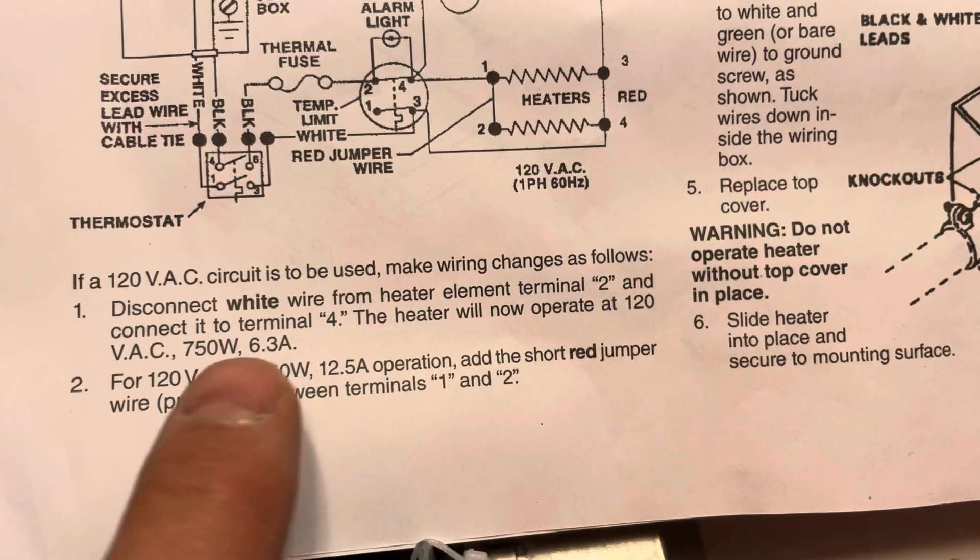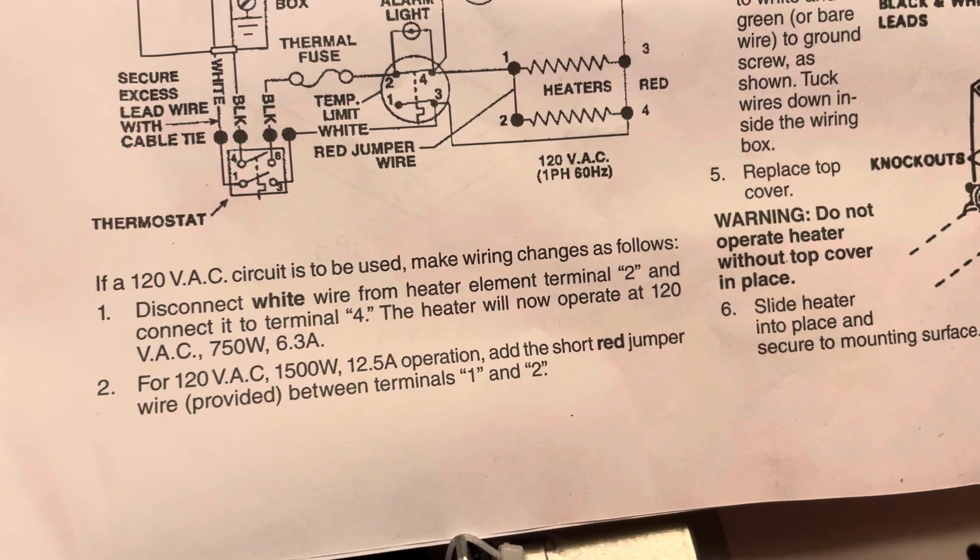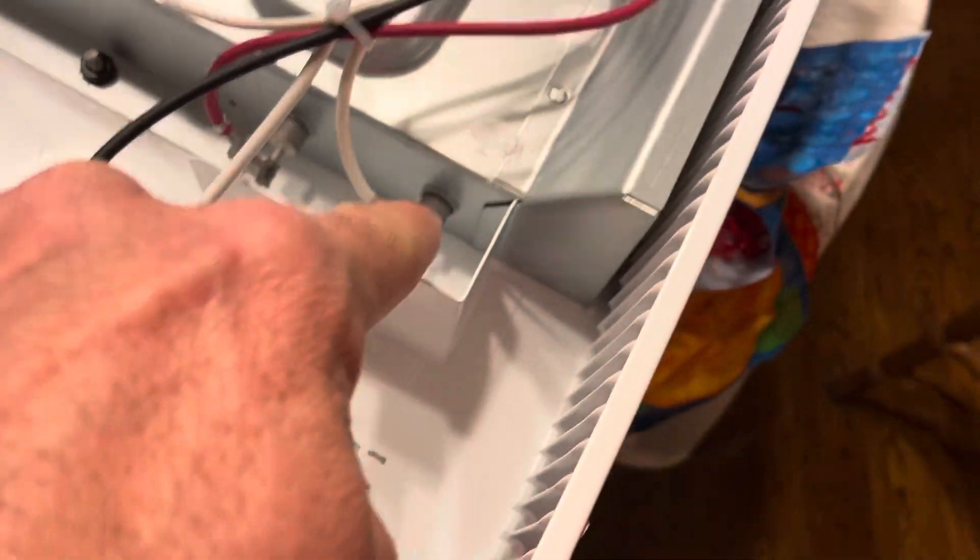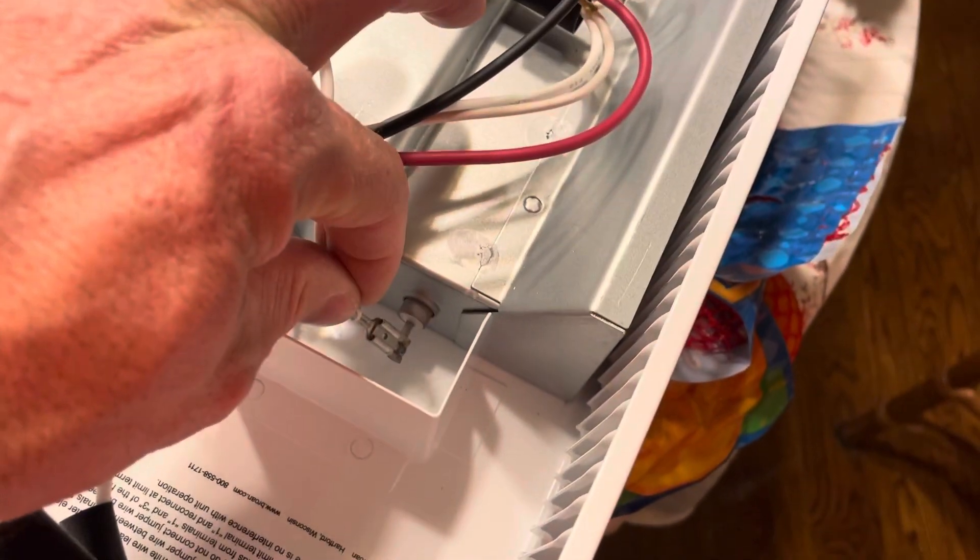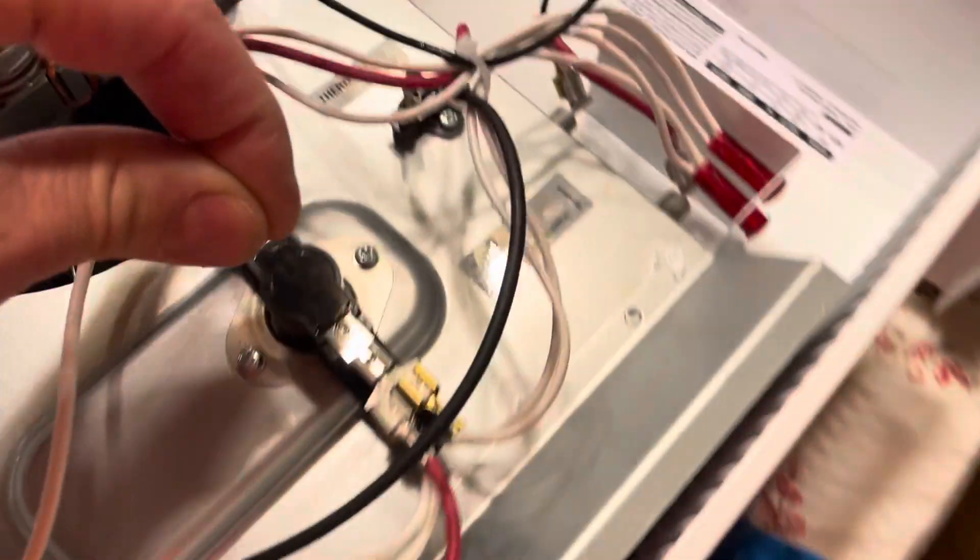And what is it telling us? It's telling us to disconnect the white wire from number 2 and connect it to terminal number 4. So here's terminal 2, we are going to disconnect this white wire from terminal 2, pull it out, we're going to bring it over to this side and they left an extra connection down here on terminal 4.